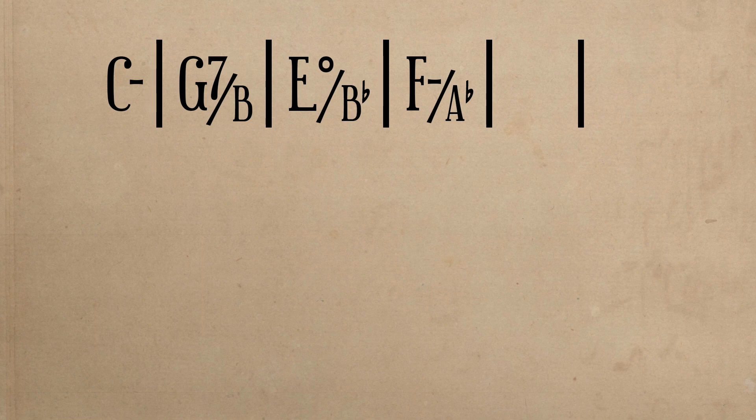After hearing F minor over Ab, the chord becomes F minor 7, the 4-7, which then leads to G7, the 5-7, ending the phrase with a half cadence.